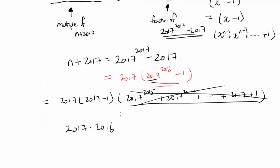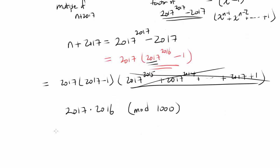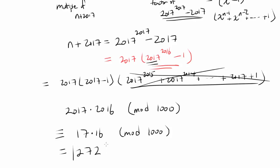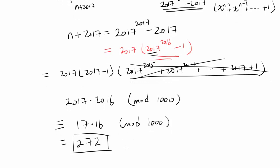To find the last 3 digits we take mod 1000, because mod 1000 gives the last 3 digits. That's congruent to 17 times 16 mod 1000, and 17 times 16 is easy to compute — that gives us 272. So the answer to this question is 272.